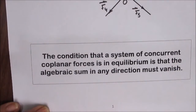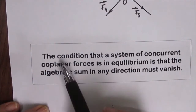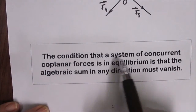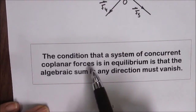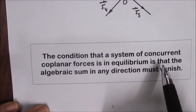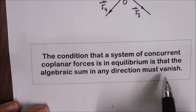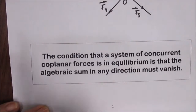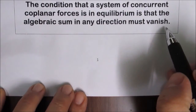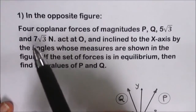An important corollary gives a condition about a system of concurrent coplanar forces in equilibrium: the condition is that the algebraic sum of forces in any direction must vanish, or must be equal to zero.